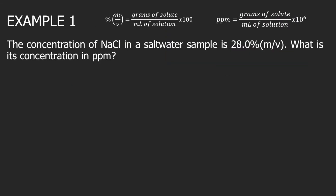Let's try example one. The concentration of NaCl in a salt water sample is 28% mass per volume. What is its concentration in ppm? In this example, we are given percent mass over volume, which is 28%, and we will convert this to ppm.